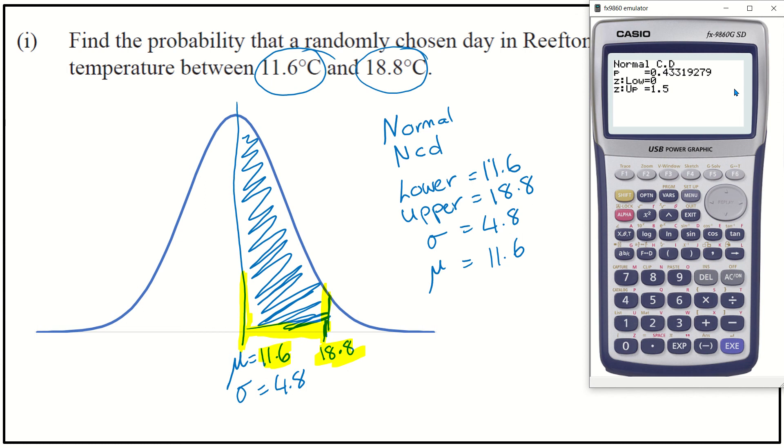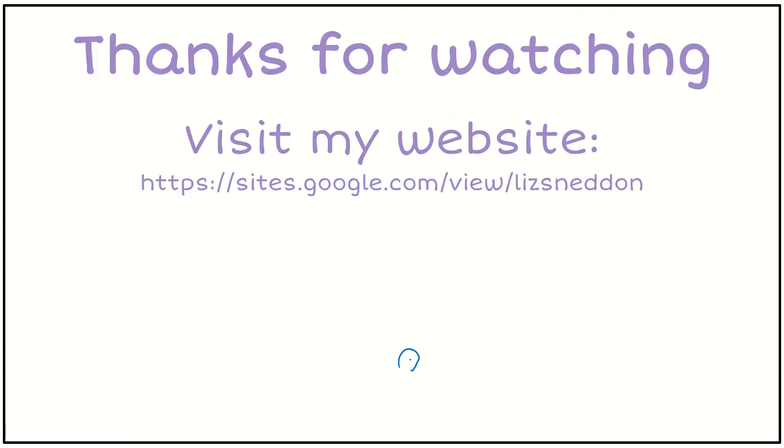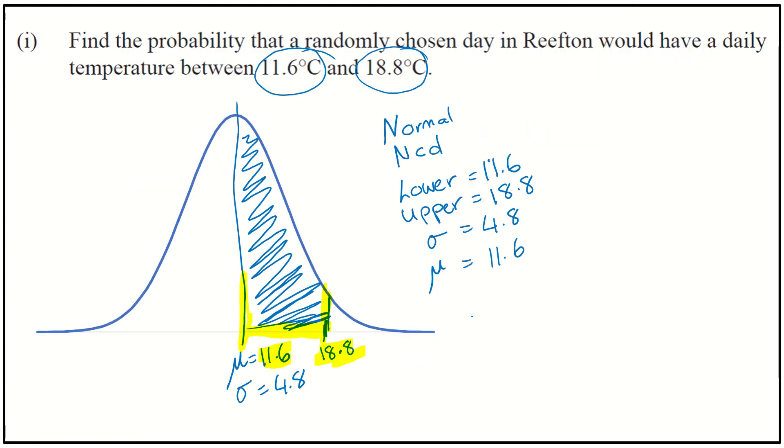I'm going to go 4 decimal places, so I'm going to write P equals 0.4332 to 4 decimal places. That is my answer. Now that is an achieve level question, so that would give me a tick in the margin with a U next to it - U for understanding, which is our achieve level.